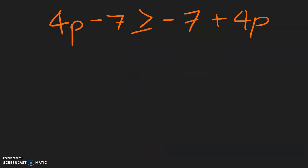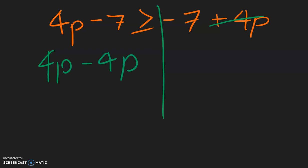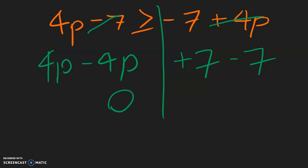Now let's move on to inequalities, but we solve them similarly. This 4p stays over here. This 4p needs to move, so positive 4p comes over, becomes negative 4p. And for the constants, this negative 7 moves over, becomes positive 7. Copy down this negative 7 over here. So 4p minus 4p is 0. 7 minus 7 is 0. Copy down the inequality. So this is saying 0 is greater than or equal to 0. Well, 0 is not greater than 0, but 0 is equal to 0, so this is always true — we can say this is infinitely many solutions.